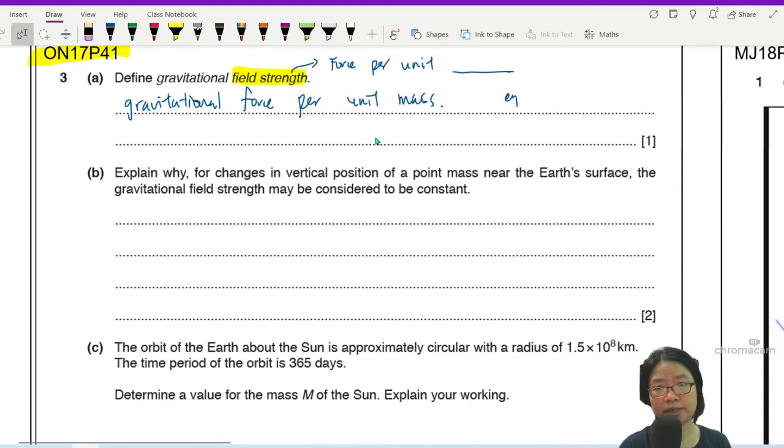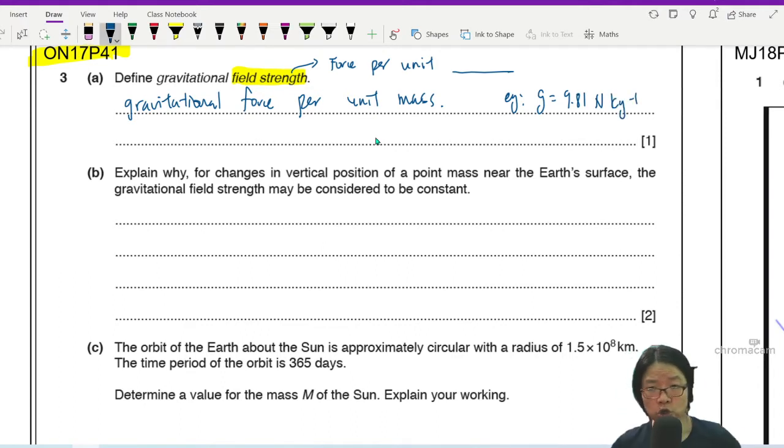So for example, for Earth, the gravitational field strength is 9.81 newton per kilogram. So to know how much your weight is or how much force gravity is acting on you, I'll just multiply your mass by 9.81. Because it's 9.81 for every kilogram. So let's move on.